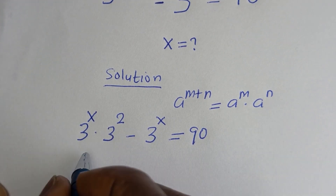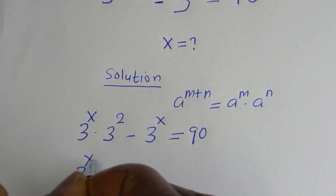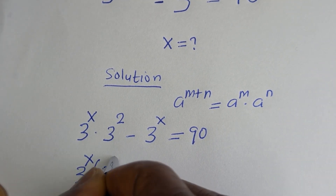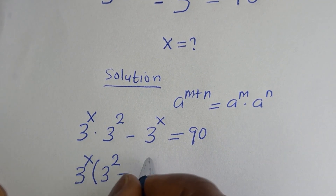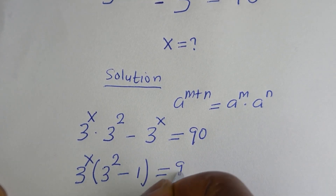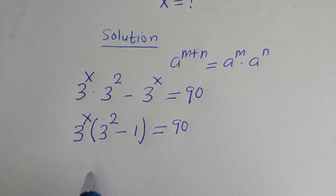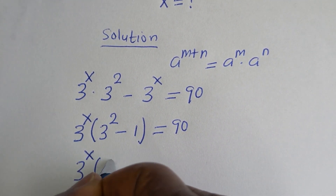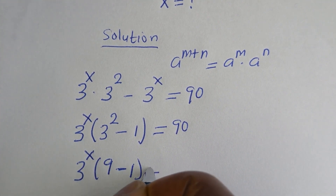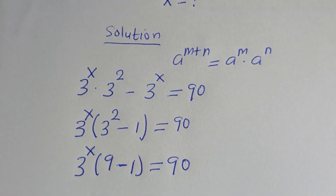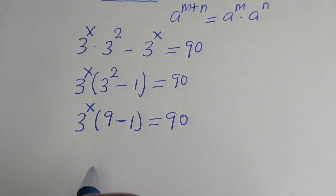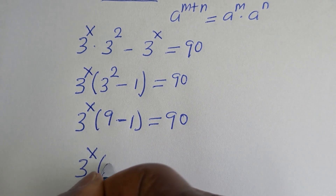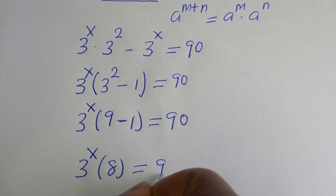Here 3 raised to power S is common — let's bring it out. 3 raised to power S, bracket: if you divide, we have 3 squared minus 1, is equal to 90. And this is 3 raised to power S bracket, 3 squared is 9, minus 1, is equal to 90.